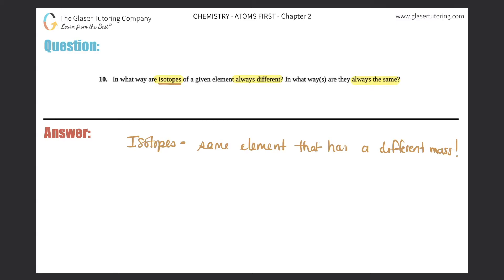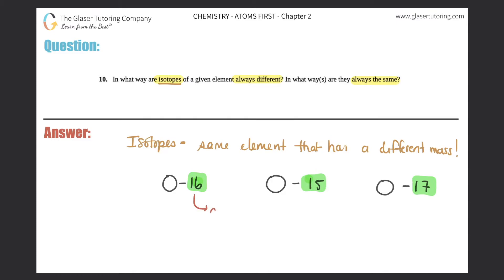Let's say that we have oxygen. We have three different oxygens: oxygen-16, oxygen-15, and oxygen-17. When they give you these numbers — 16, 15, and 17 — these indicate the atomic mass. The atomic mass is always equal to the number of protons plus neutrons.